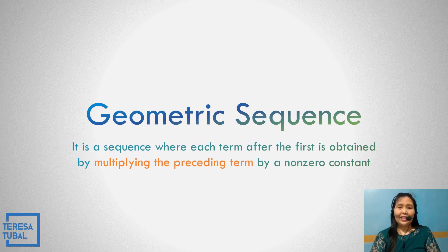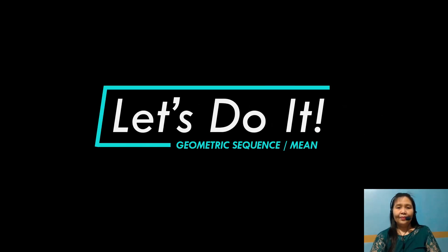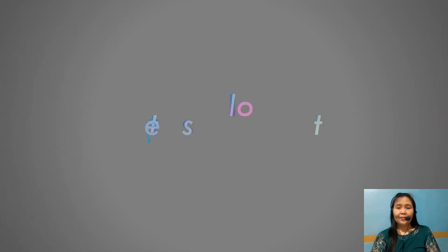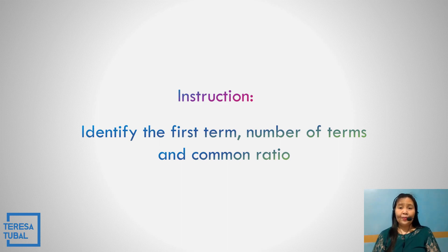What is a geometric sequence? It is a sequence where each term after the first is obtained by multiplying the preceding term by a non-zero constant. Let us identify the first term, the number of terms, and the common ratio.